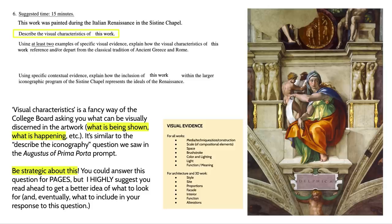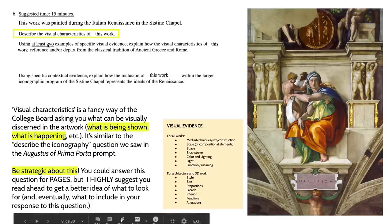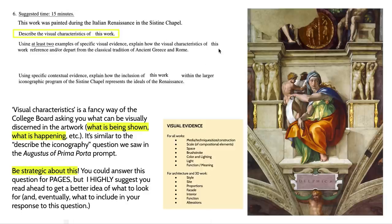We're going to start at the very beginning where it says 'describe the visual characteristics of the work.' This is the College Board's fancy way of asking what can be visually discerned in the artwork — what is being shown, what is happening. It's similar to the 'describe the iconography' question we saw on the Augusta of Prima Porta prompt. You need to be strategic about this. You could wax poetic describing all the intricacies and details, but I highly suggest you look ahead in the question to get a sense of what kinds of things they're looking for. It might be helpful to focus on elements of this figure that relate to the classical tradition of ancient Greece and Rome.